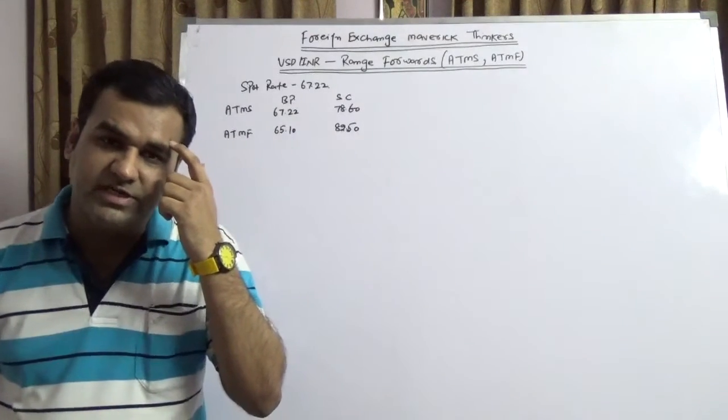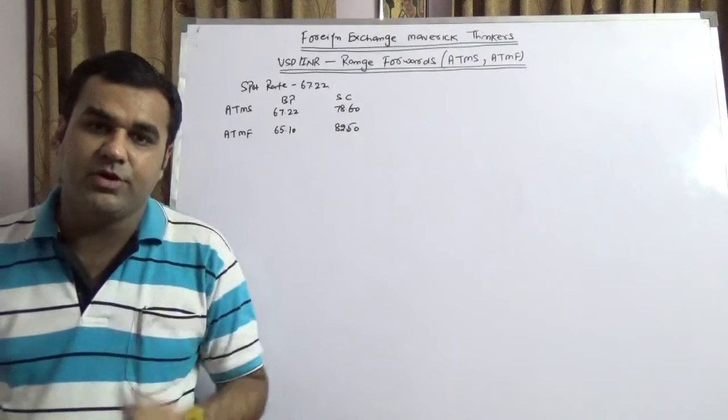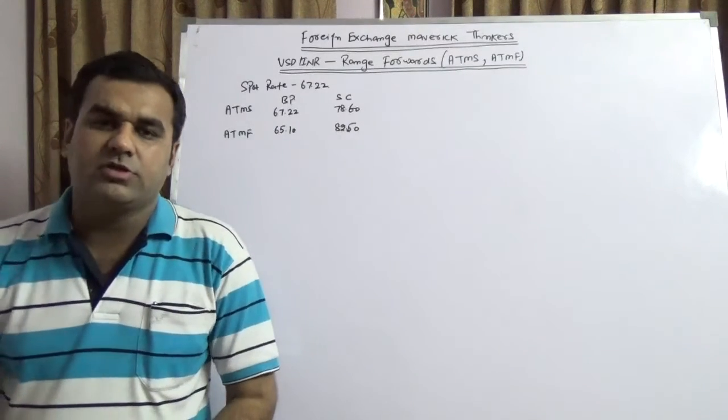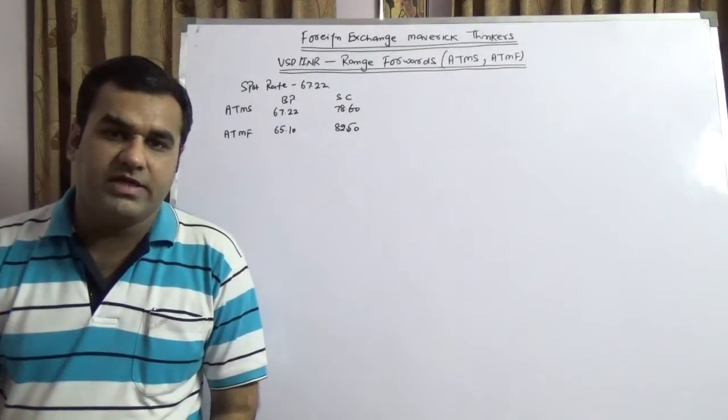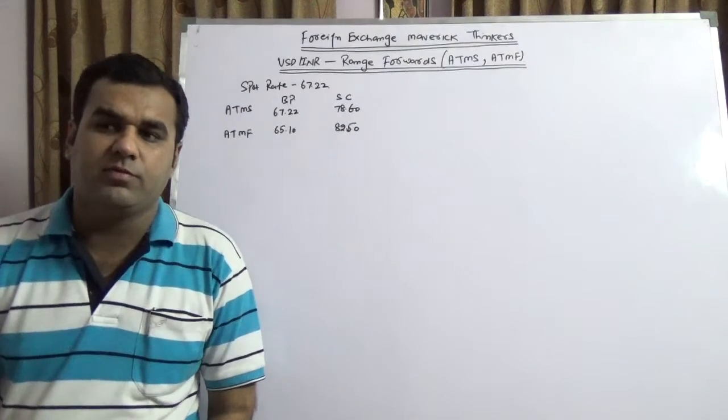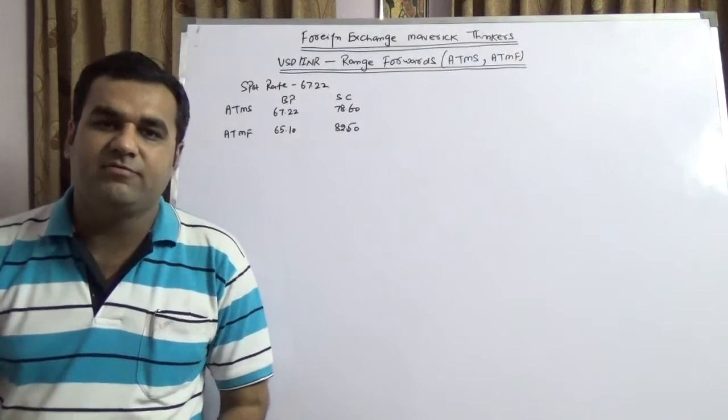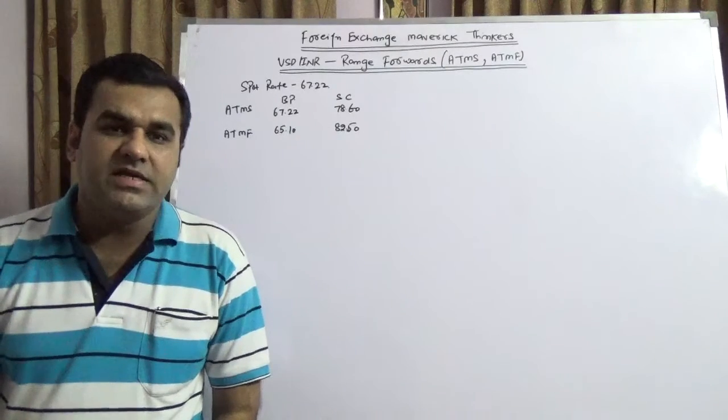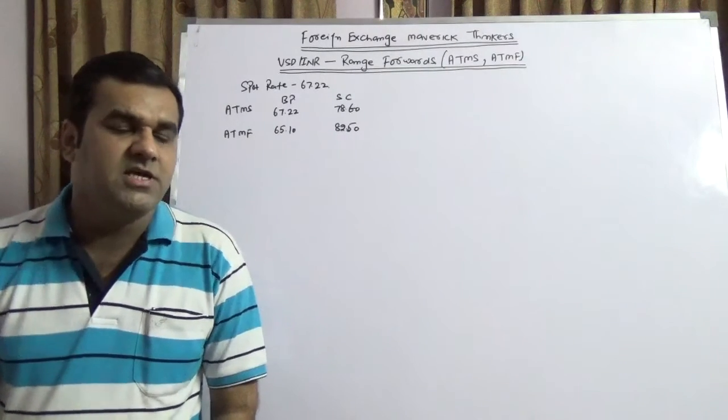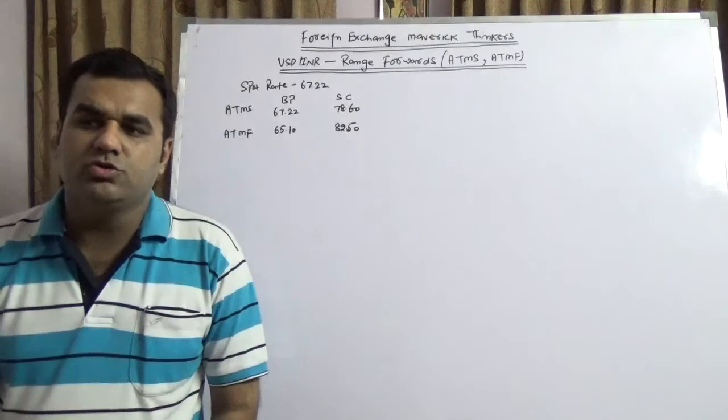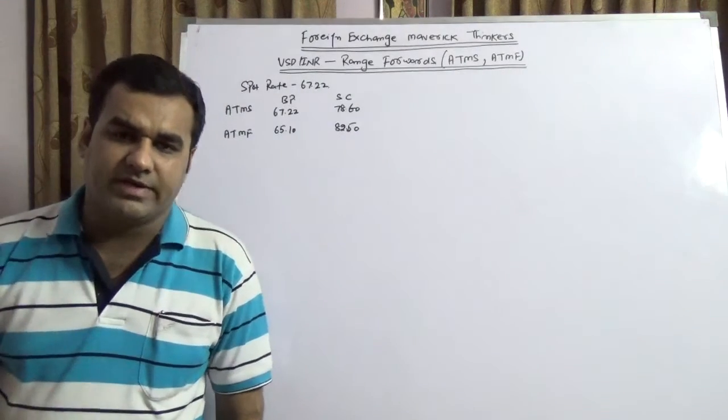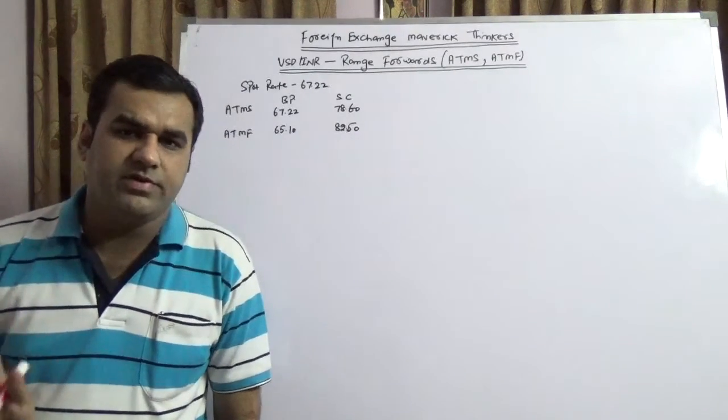Now it is trading at approximately 67.22. There are a lot of exporters who not hedged at that level and also a lot of importers who not hedged. At that moment of time it was an exporter game and today it's an importer game. The purpose of the video is to introduce you to two kinds of range forward contracts.